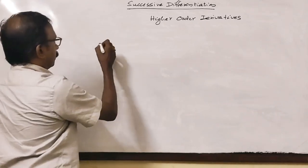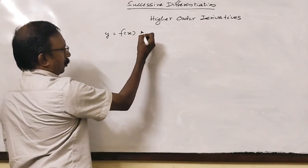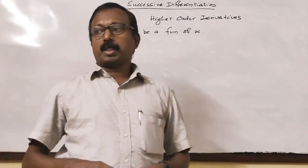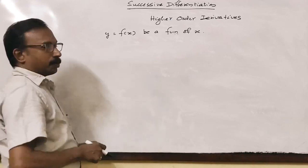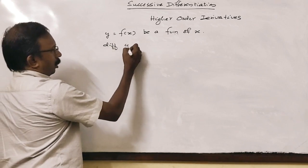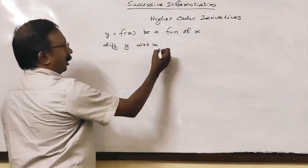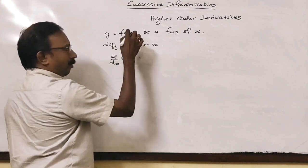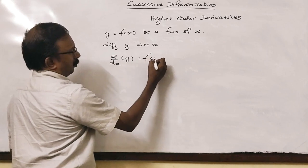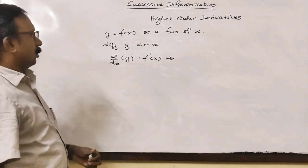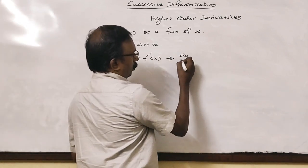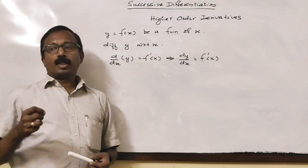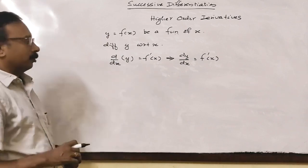Suppose y is a function of x. If I am differentiating y with respect to x, we have dy/dx equal to f dash x. This is what we call the first derivative of y with respect to x.